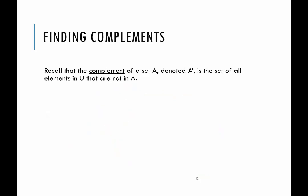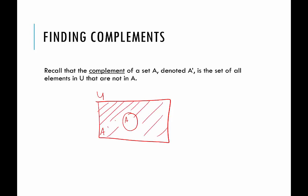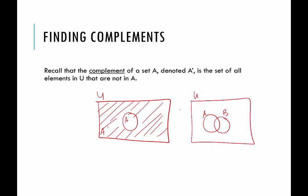The next definition should be a review: the complement of a set. The complement of set A, denoted A complement with an apostrophe, is the set of all elements in U that are not in set A. In the Venn diagram with just set A, A complement is everything outside of set A. With two sets A and B, A complement includes everything not in set A, which does include things in set B, but excludes anything in the overlap with A.